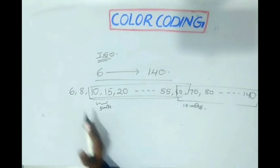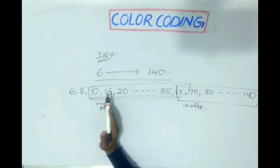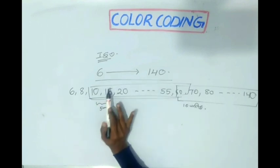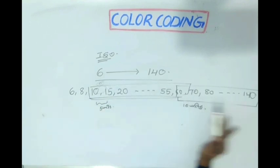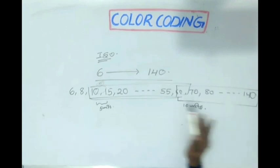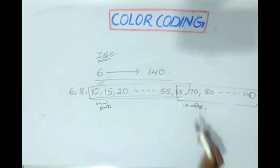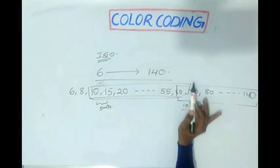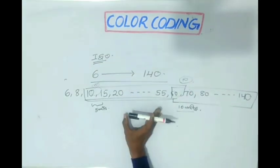To repeat: from 10 to 60, each number advances by 5 units — for example, 10, 15, the difference is 5. Whereas from 60 to 140, the next consecutive number of the file increases by 10 units — for example, 60, 70, the difference is 10.